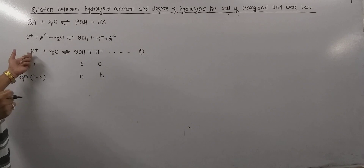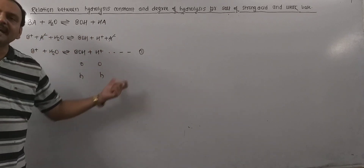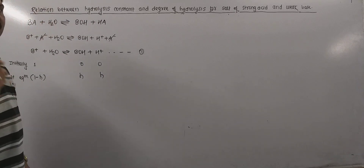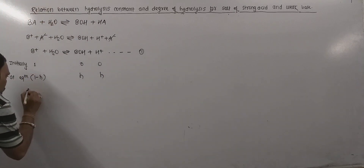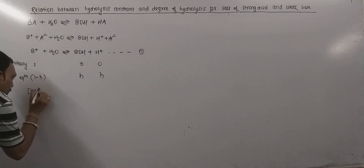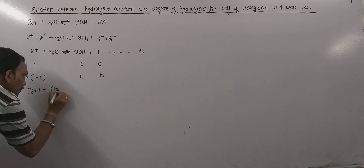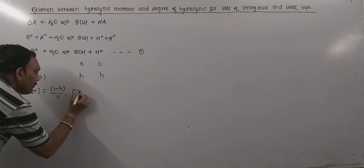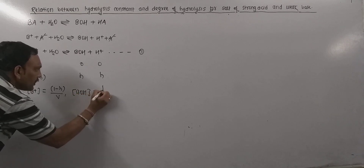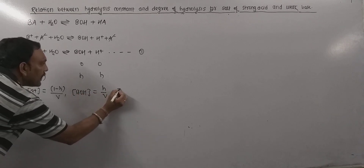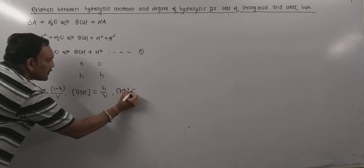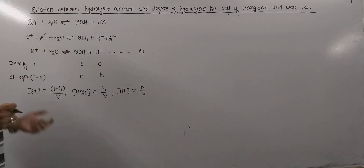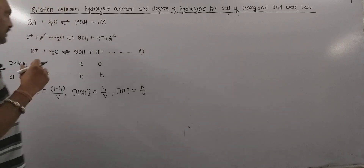B⁺, BOH, and H⁺ are all present in V liters of water. Thus the concentration of BOH = H/V, concentration of H⁺ = H/V, and concentration of B⁺ = (1 − H)/V.